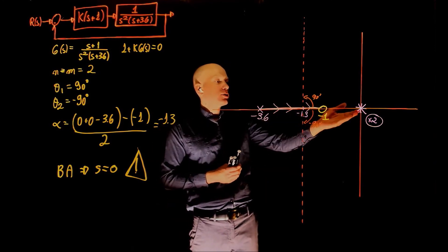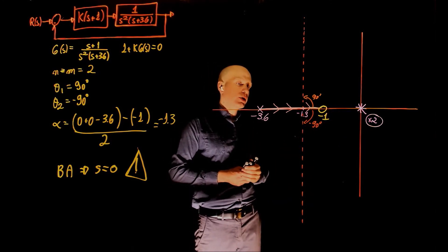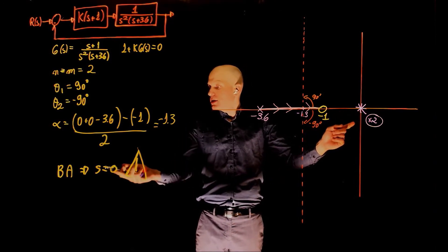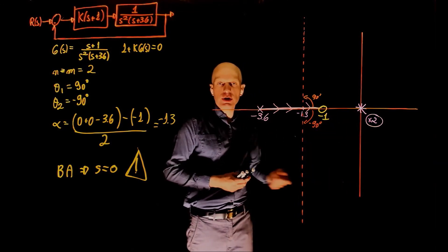Now what happens to these two guys? Well, they need to go to the asymptotes that are centered at negative 1.3. Our breakaway point is at 0, and 0 is indeed part of the root locus because that's where the poles are initially located.